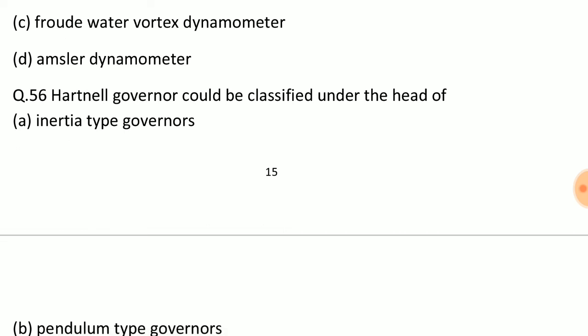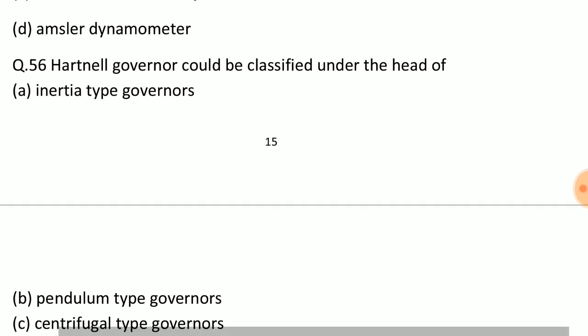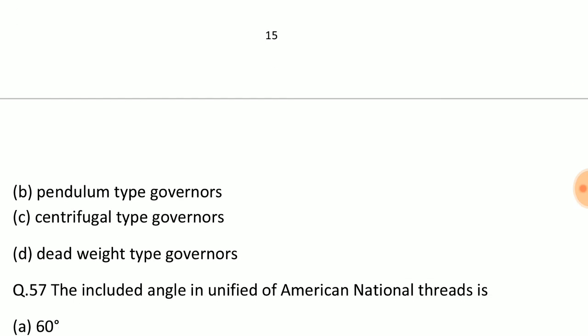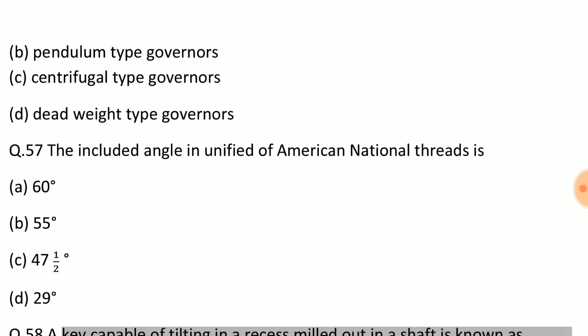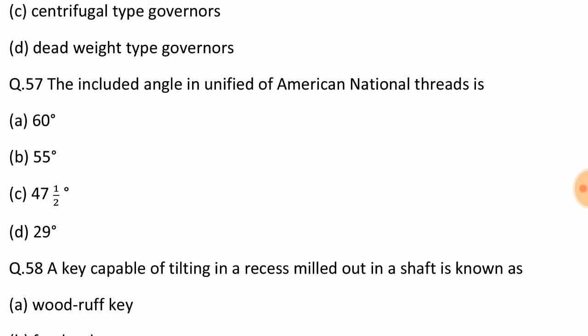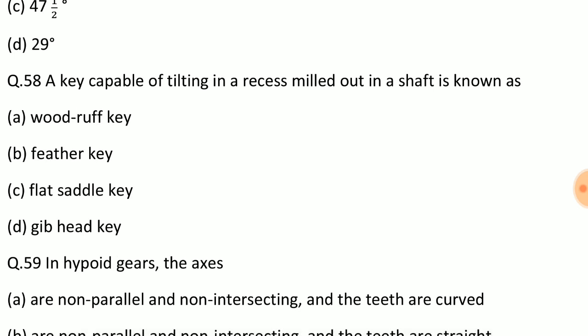Question: Hartnell governor could be classified under the head of? Answer: Option C, centrifugal type governors. Question: The included angle in unified or American national threads is? Answer: Option A, 60 degrees. Question: A key capable of tilting in a recess milled out in a shaft is known as? Answer: Option A, Woodruff key.